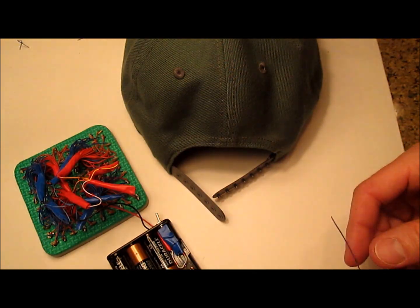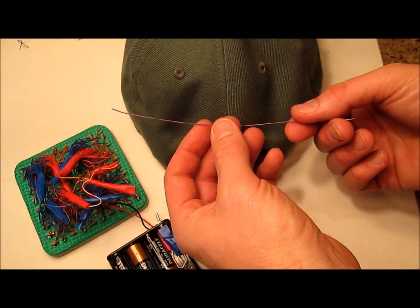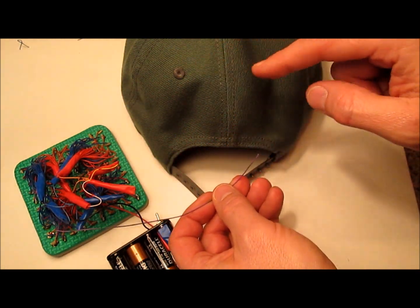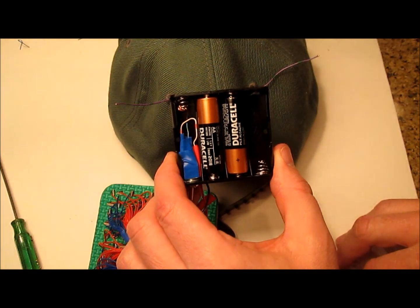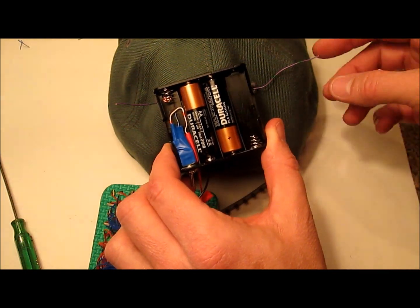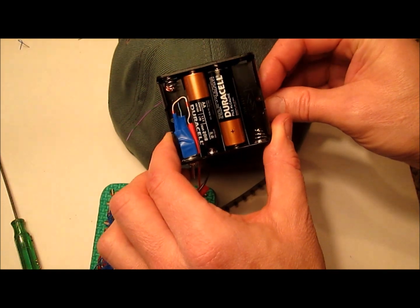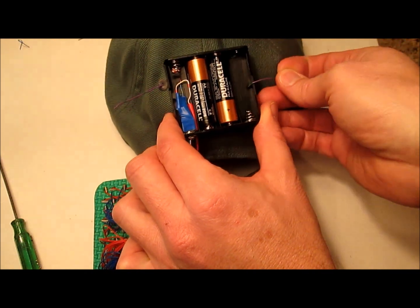Now let's install it in the back of the baseball cap. Start by taking a piece of wire or string and feeding it up through these two holes. Now tie the battery pack to the back of the hat by putting the wires through the little holes on the sides like this and tying them down.